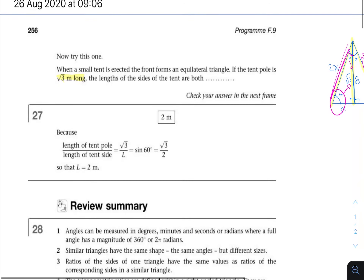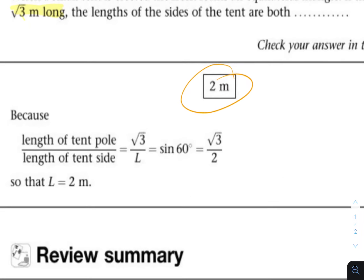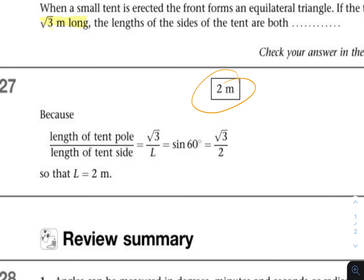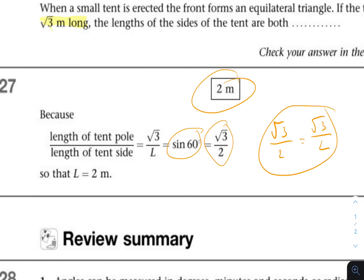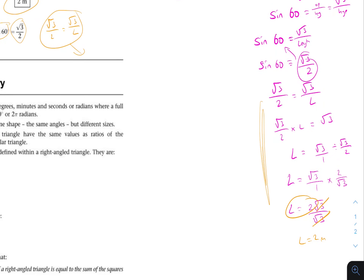Let's check our answer. You can see 2 meters: the length of the tent pole over the length of the side, √3/L = sine 60. They pick the same approach as us, and sine 60 equals √3/2. So √3/2 = √3/L, and they've just worked out directly that L equals 2 meters as well. If you're a bit unsure with that, practice — Khan Academy is your best friend.